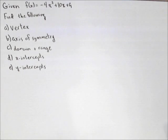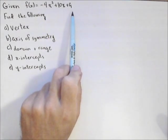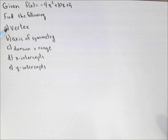In this video, we're going to take a quadratic and find its characteristics algebraically. So here's our quadratic: -4x² + 10x + 9, and we're going to find the following: the vertex, the axis of symmetry, the domain and range, the x-intercepts, and the y-intercepts.